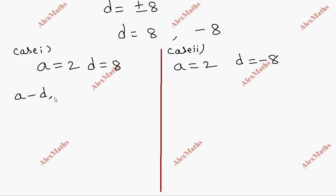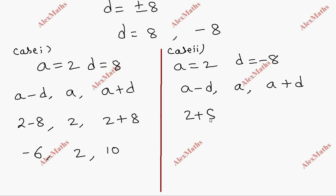The three terms are a-d, a, and a+d. For case 1, that's 2 minus 8, 2, and 2 plus 8, which gives -6, 2, and 10.